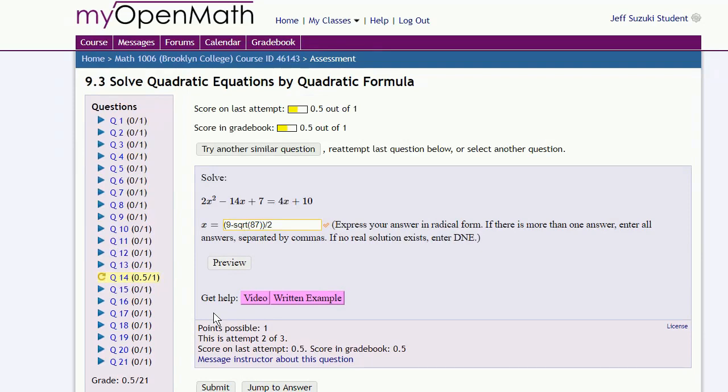And we only got 0.5 out of 1. And well, this is a quadratic equation. There should actually be two solutions. And we forgot to enter in the second one. So let's type in that second one.